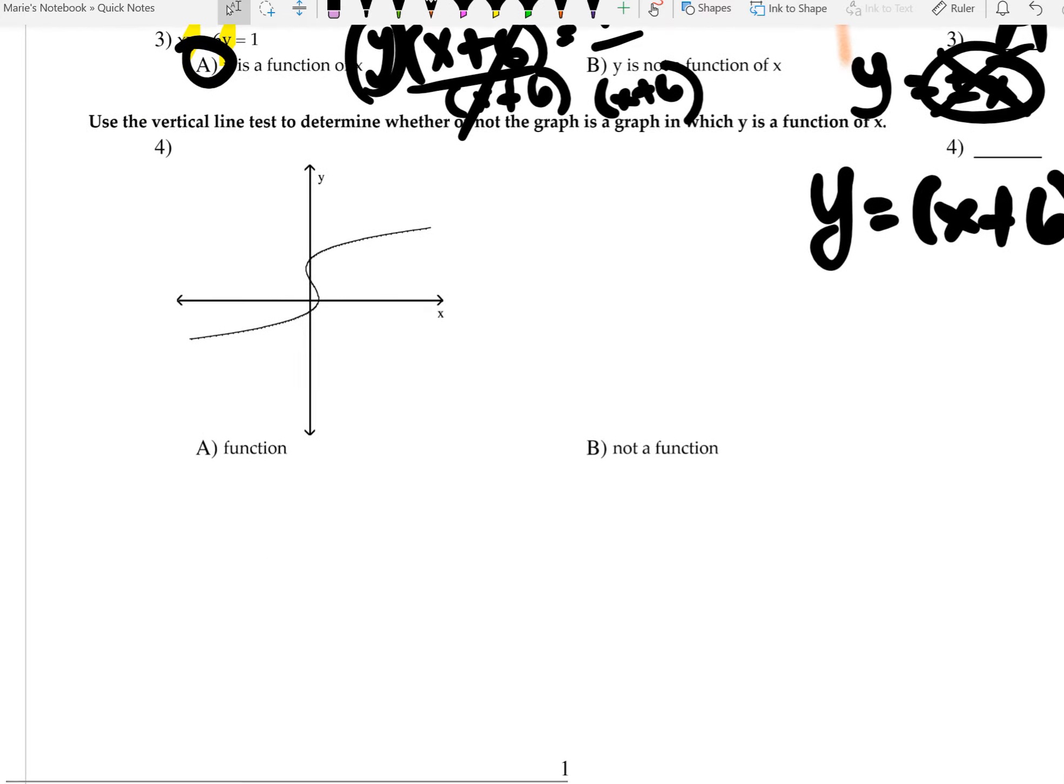Now when you look at number 4, understand number 4 has two areas where this is, or three areas where this is crossing. So it fails a vertical line test, so obviously this is not a function.